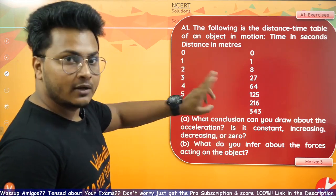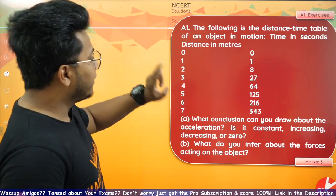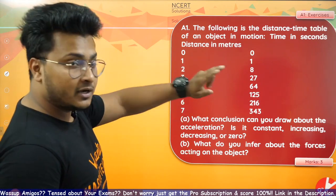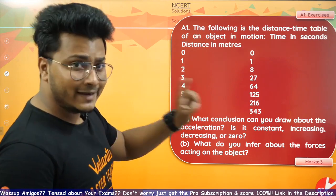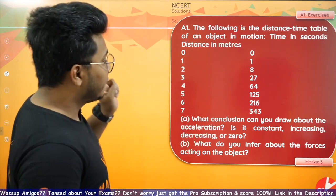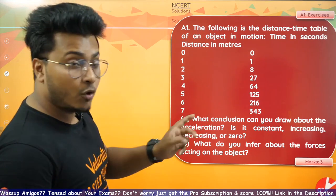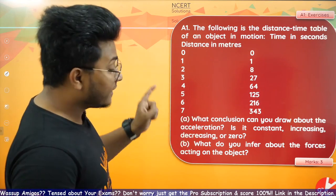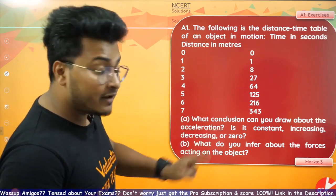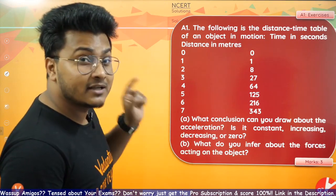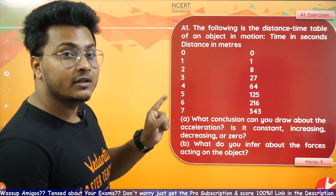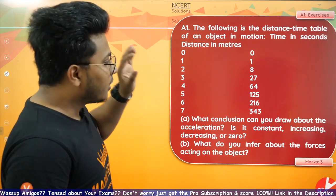The table reads: at zero seconds, zero meters; at one second, one meter; at two seconds, eight meters; at three seconds, twenty-seven meters; at four seconds, sixty-four meters; at five seconds, one hundred twenty-five meters; at six seconds, two hundred sixteen meters; and at seven seconds, three hundred forty-three meters.